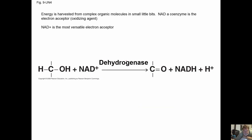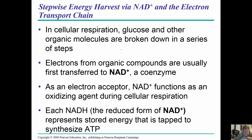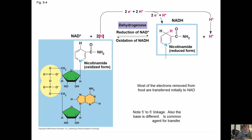Energy is harvested from complex organic molecules in small little bits — that is very important. One way we do this is with NAD+, nicotinamide adenine dinucleotide, a coenzyme that is an electron receptor and an oxidizing agent. NAD+ is the most versatile electron receptor. Wherever we have a hydroxyl group, an enzyme called dehydrogenase can pull hydrogen off and produce NADH. Each NADH represents stored energy that is used to synthesize ATP.